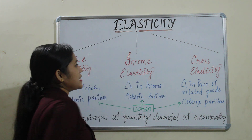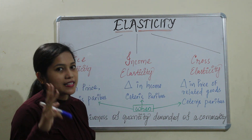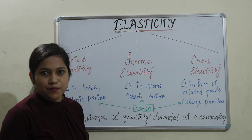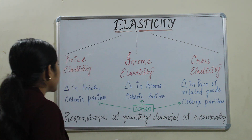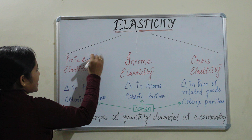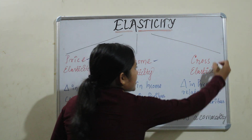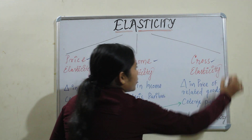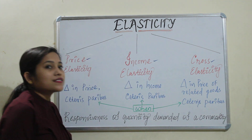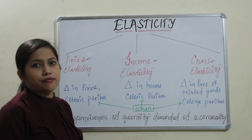Elasticity is of majorly three types. First is Price Elasticity, second Income Elasticity, and third one is Cross Elasticity.